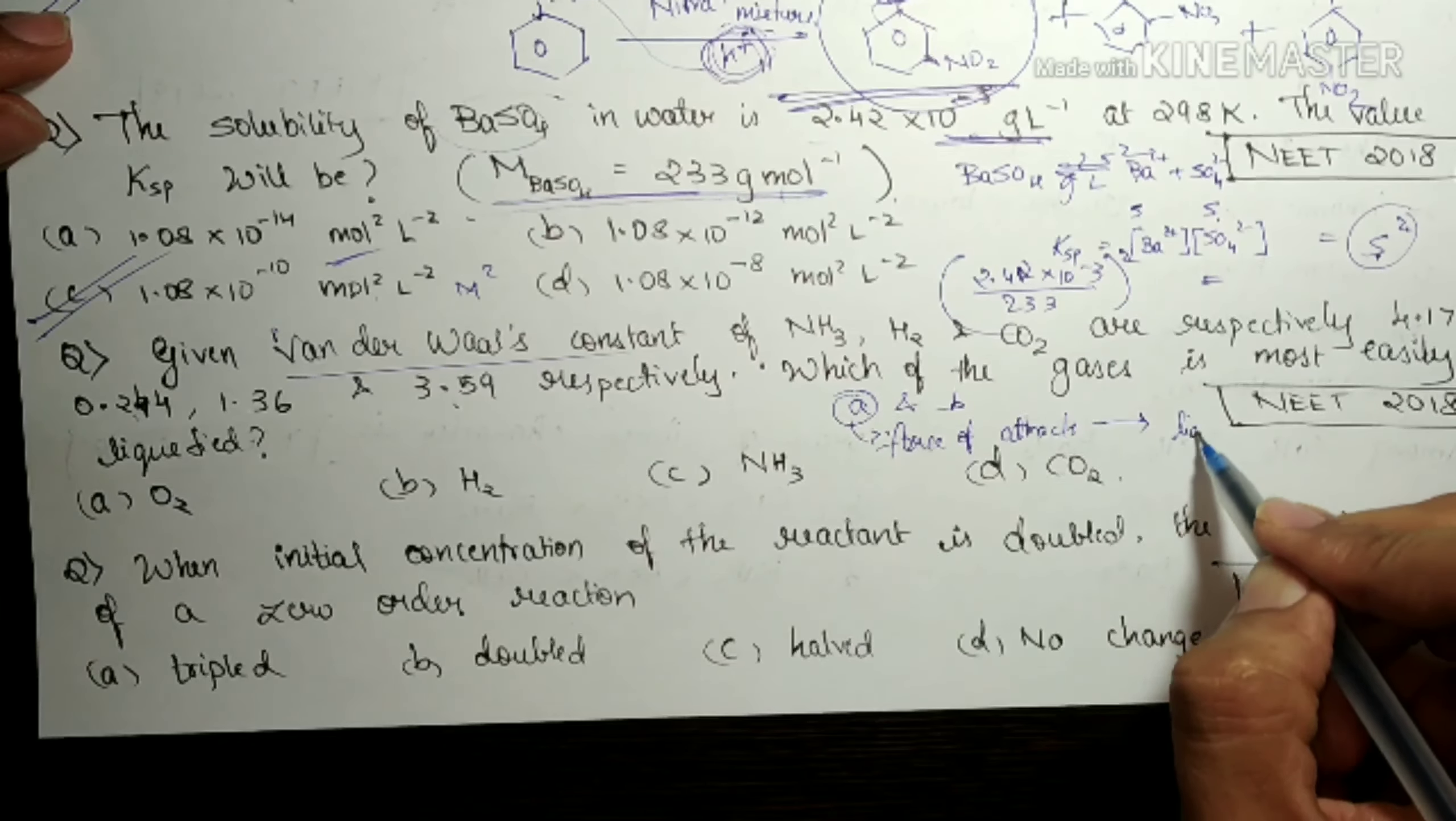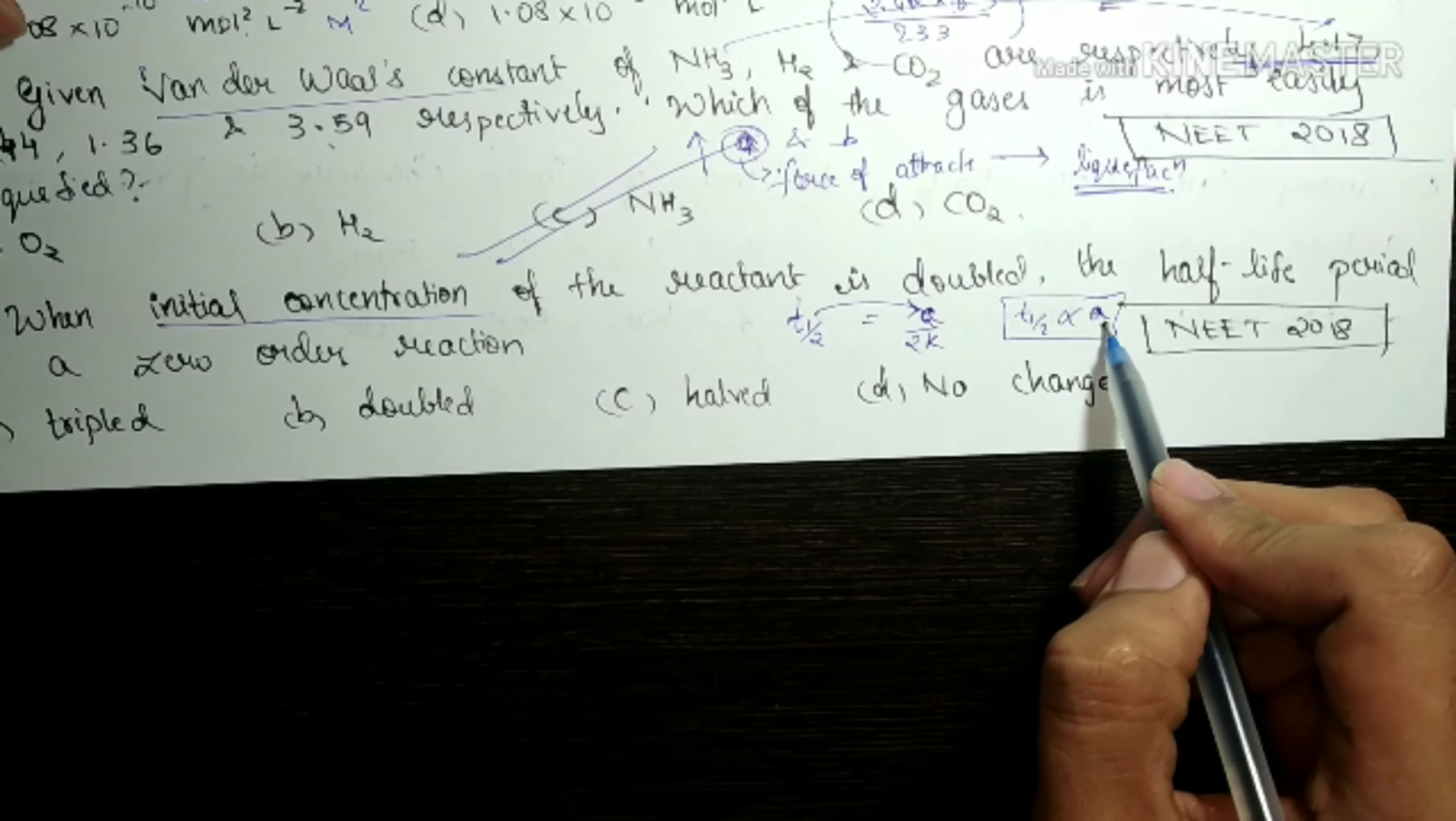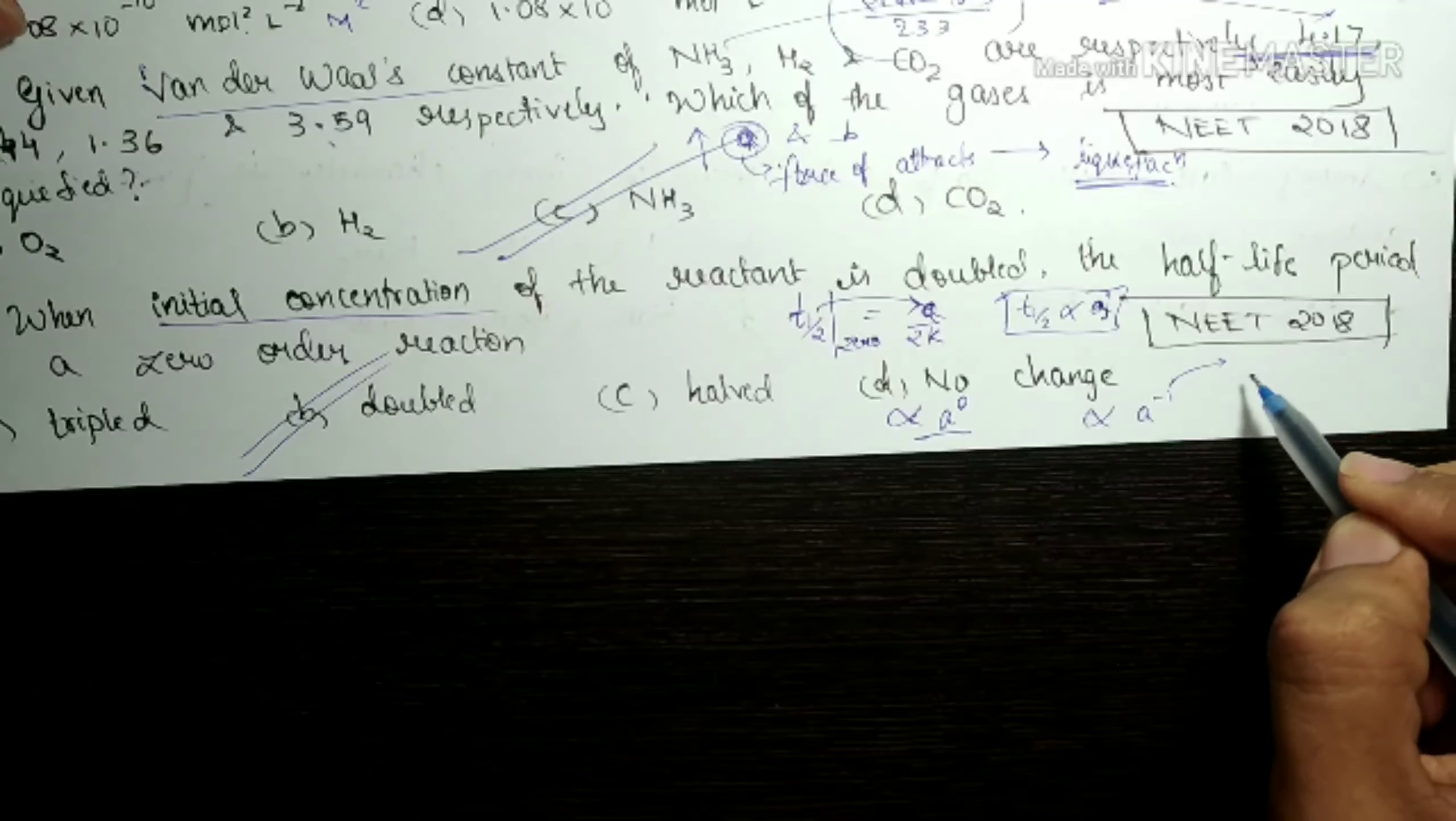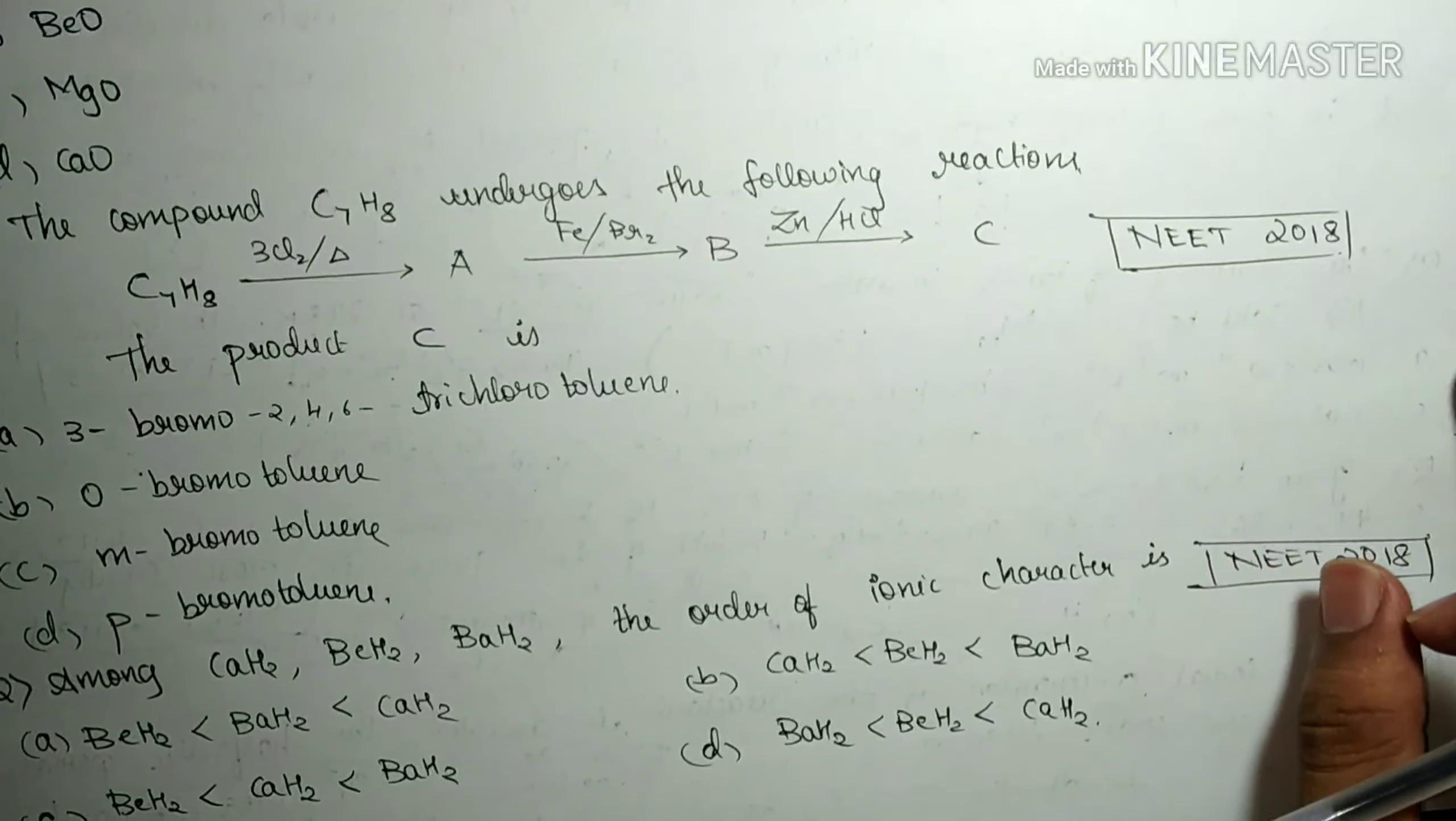When the initial concentration of the reactant is doubled, the half-life of a zero-order reaction becomes what? You know that half-life of a zero-order reaction, that is T half, is given by A by 2K, right? So it is directly related to A. A is nothing but initial concentration. So T half is directly proportional to A. And that means if this is doubled, T half also is doubled. So option B should be correct. This is for zero-order reaction. You know that for first-order reaction, it is proportional to A^0. And second-order reaction, it is proportional to A^-1.